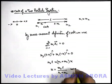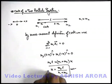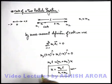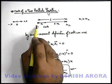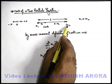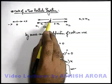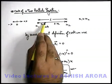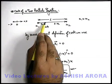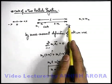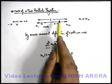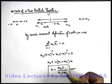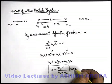Solving this gives m2 × l = (m1 + m2) × x, so x = m2 × l / (m1 + m2). This is a very important relation you should keep in mind: if there are two particles separated by distance l, then from the first particle, the distance of centre of mass will be the second particle's mass multiplied by the separation divided by the sum of the masses.